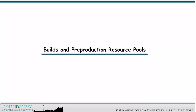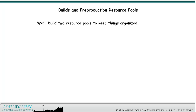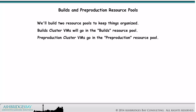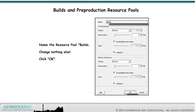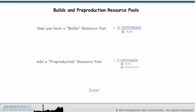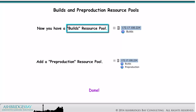The next thing to do is configure the builds and Pre-Production Resource Pools. We'll build two resource pools to keep things organized. Our Builds Cluster VMs go in the Builds Resource Pool and the Pre-Production Cluster VMs go in the Pre-Production Resource Pool. Right-click on your host in Inventory and click New Resource Pool. Name the resource pool Builds — don't change anything else — and click OK. Now you have a Builds Resource Pool. Add a Pre-Production Resource Pool and you're done!